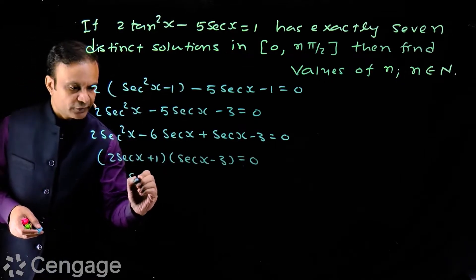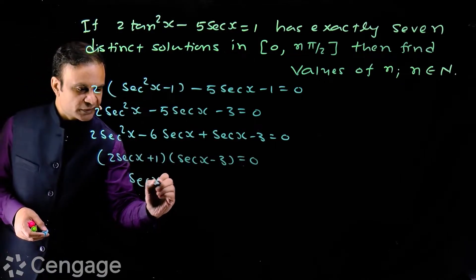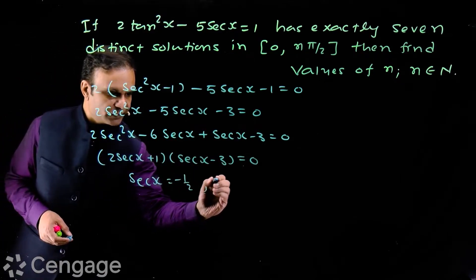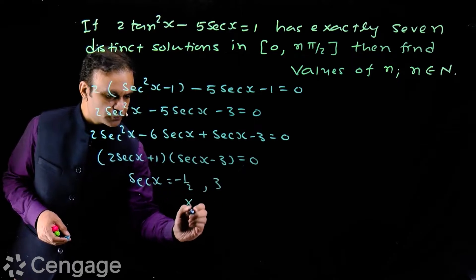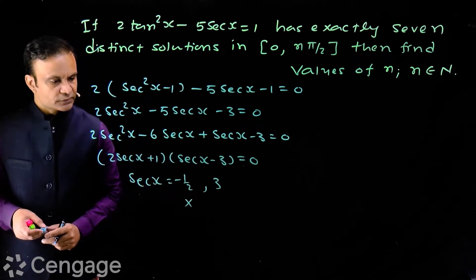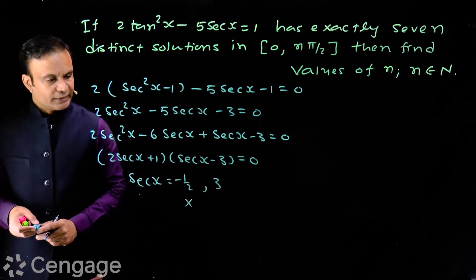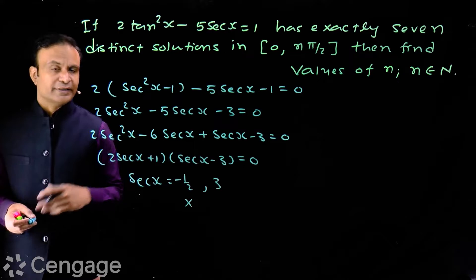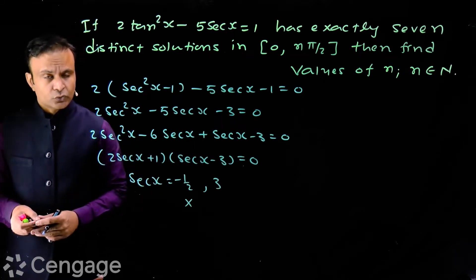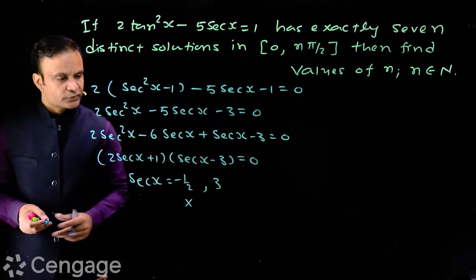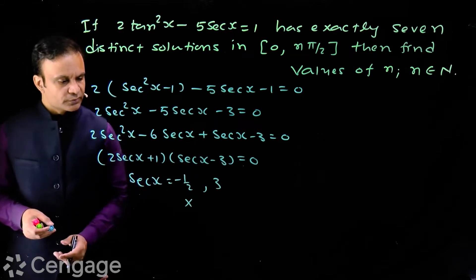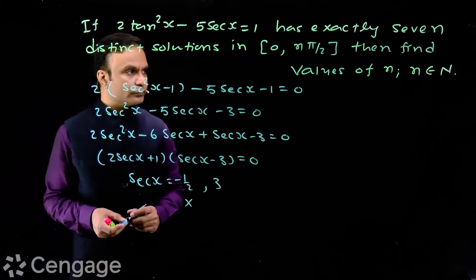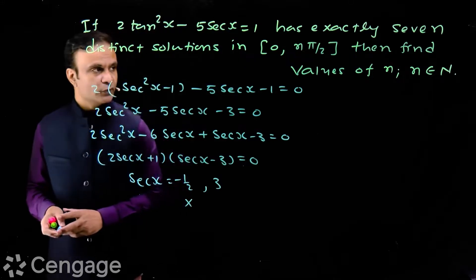This product equals 0 gives us two values: sec x = -1/2 and sec x = 3. The value sec x = -1/2 is not possible because the range of sec x is less than or equal to -1 or greater than or equal to 1. So we consider sec x = 3 only.